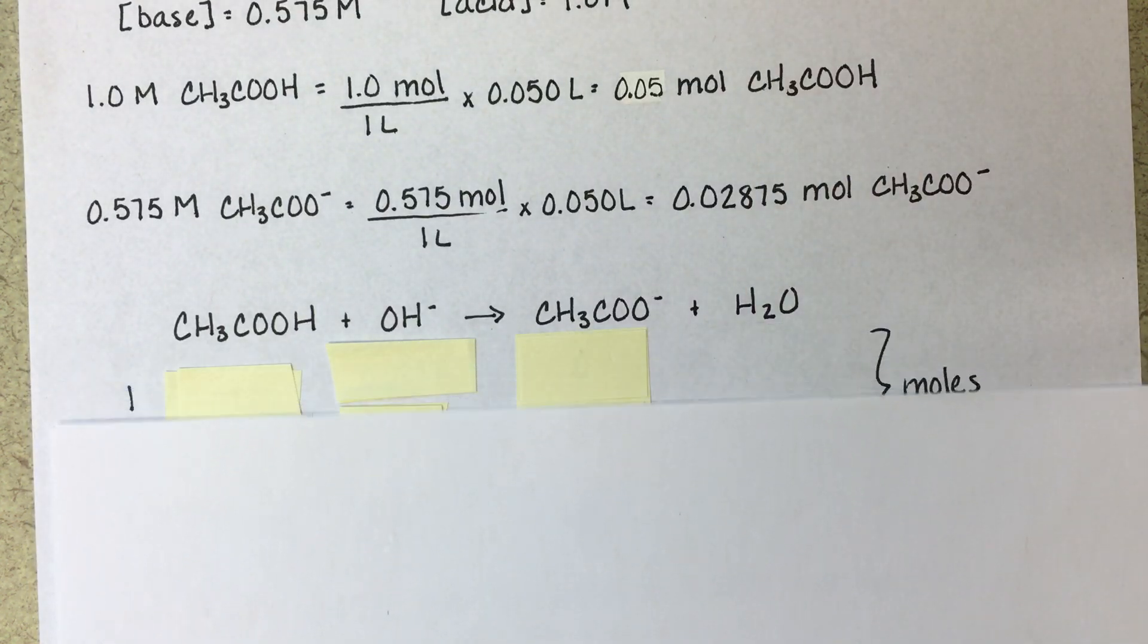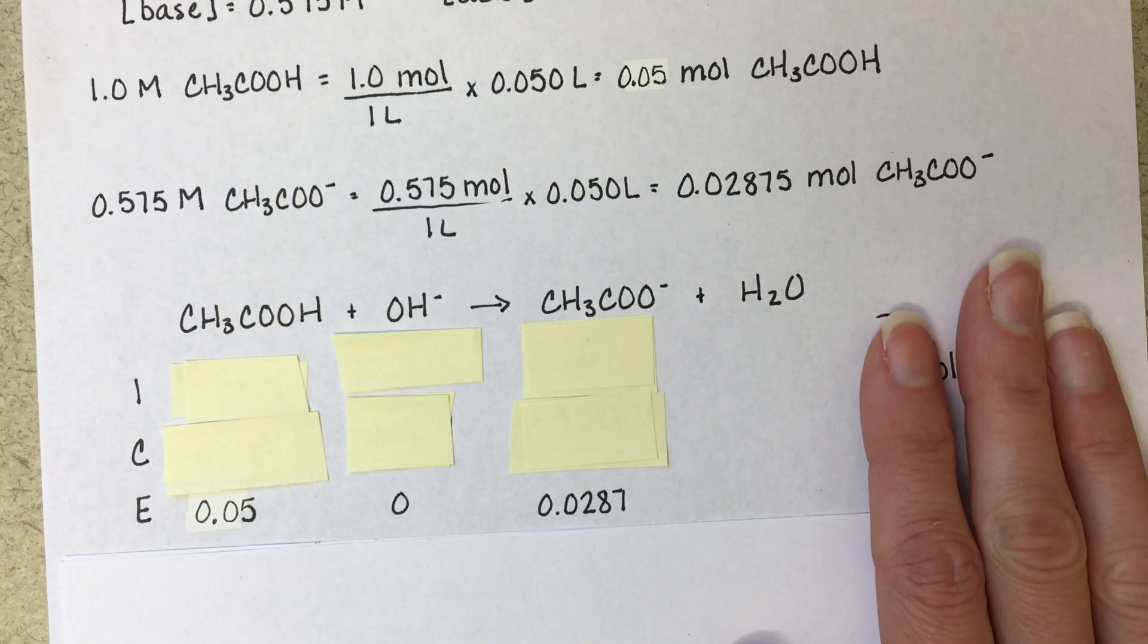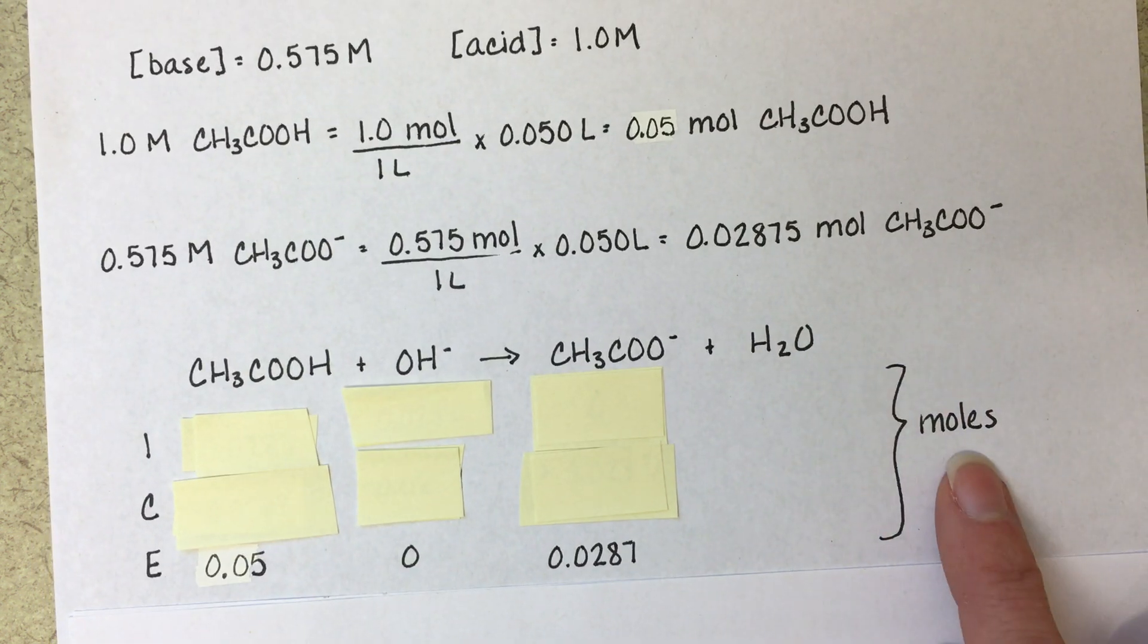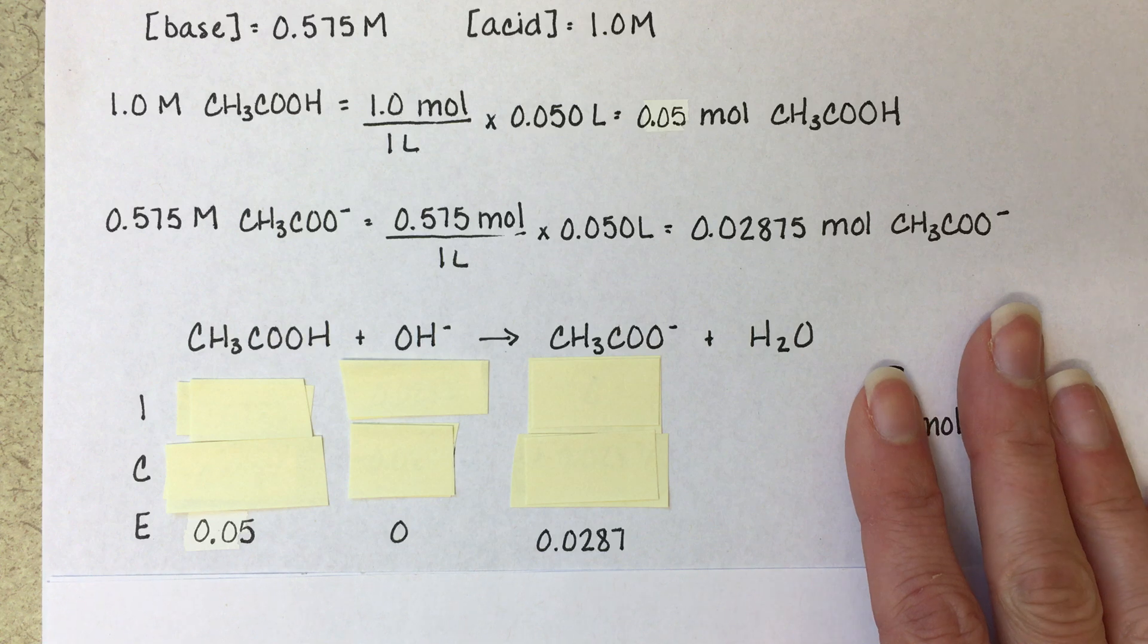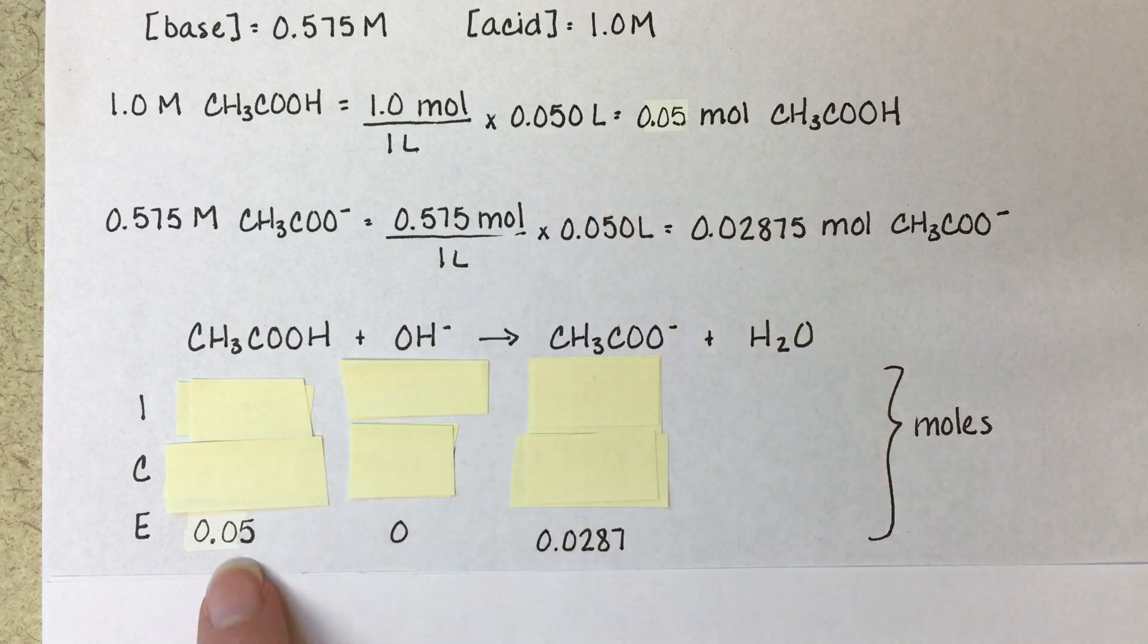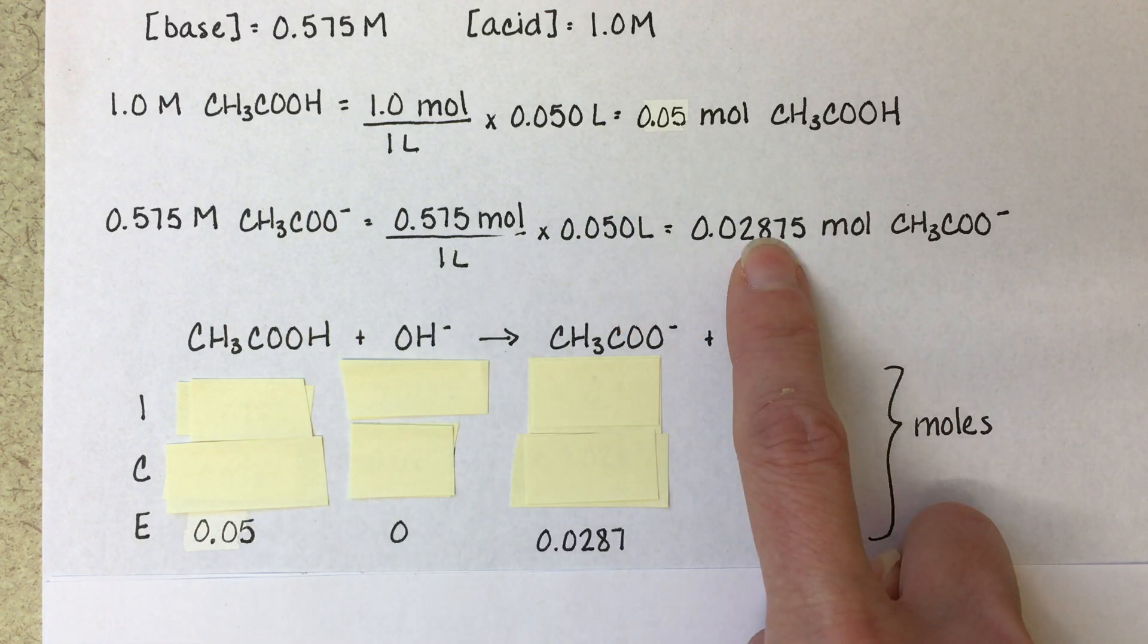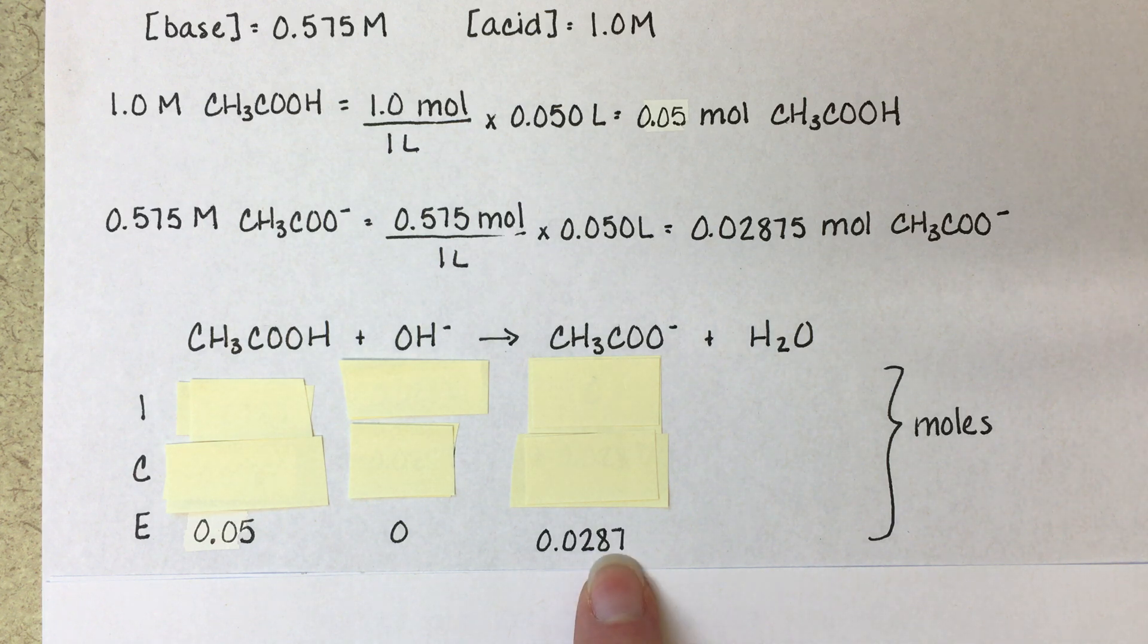We're going to do this calculation with an ice table. We're going to work from the bottom up. We're going to do it in moles. We're going to work from the bottom up because we know that when this reaction is all over, we need to have 0.05 moles of acetic acid, and we need to have 0.02875 moles of acetate.